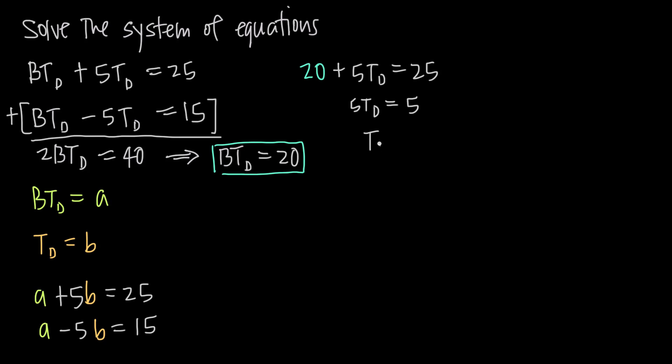Subtracting 20 from both sides, we get 5T sub D equals 5. Dividing both sides by 5, we get T sub D equals 1. Now we've solved for both unknowns.